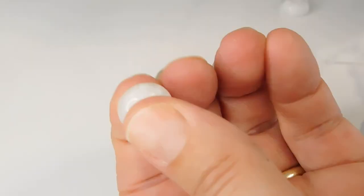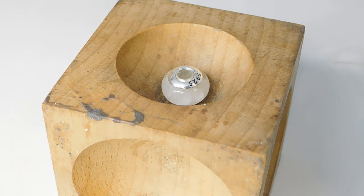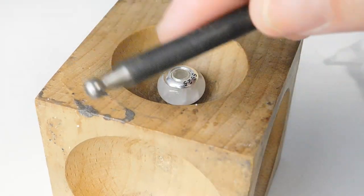Once you know they're happy with the bead you can add a bead core. Today I'm using a wooden doming block to stabilize the bead and using a doming punch set to flare the core.